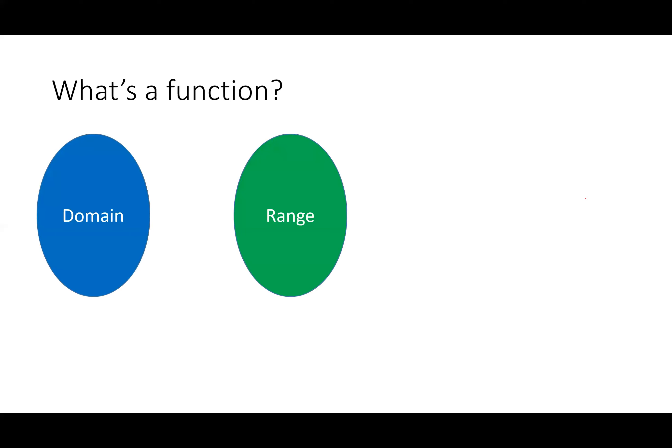So we've got our domain and our range. Our domain is our input values; the range is our output values. If I have the domain of 3 and the range of 4, and I create some mapping between these — call it f — then f(3) is equal to 4. That means when I put 3 into this function, I end up getting 4 as an output.